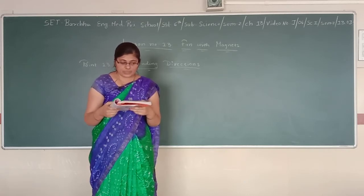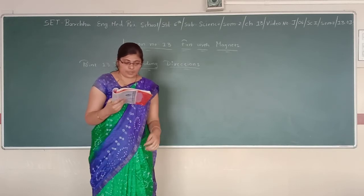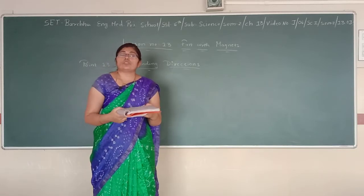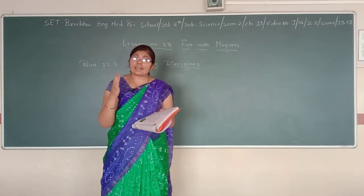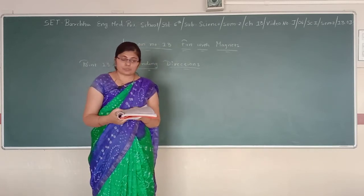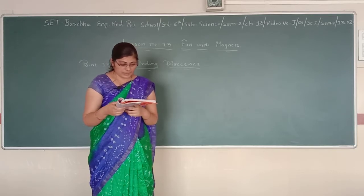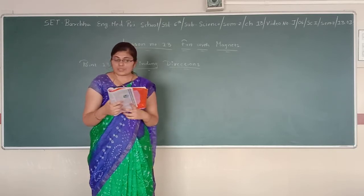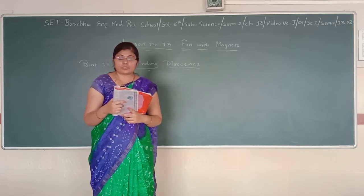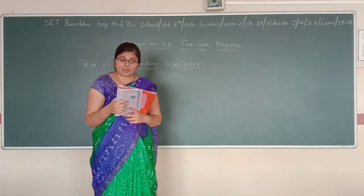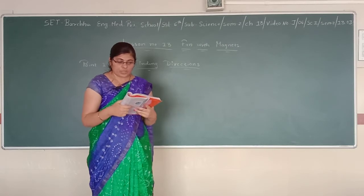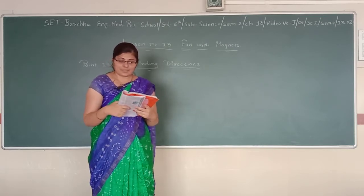Using the sun to find directions may not be very exact, but it will help to make out which direction is north and which is south. Using this, you can figure out which end of a bar magnet is pointing to the north and which is pointing to the south. The end that points towards the north is called the north-seeking end, or the north pole of the magnet. The other end, which points towards the south, is called the south-seeking end, or the south pole of the magnet.